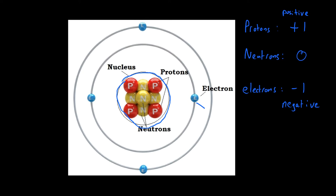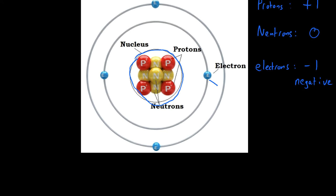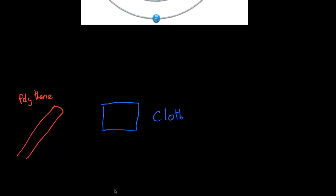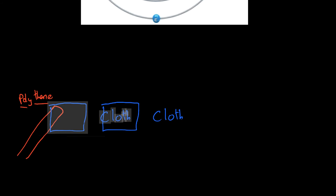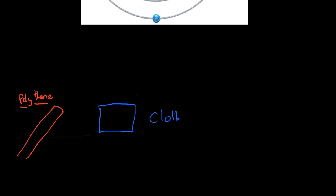Insulators are things which don't conduct electricity. The first example is a polythene rod — polythene is a type of plastic and is an insulator. When you take a cloth and rub it on the polythene rod, electrons from the cloth are transferred to the polythene rod. You end up with extra electrons now sitting on the polythene rod.